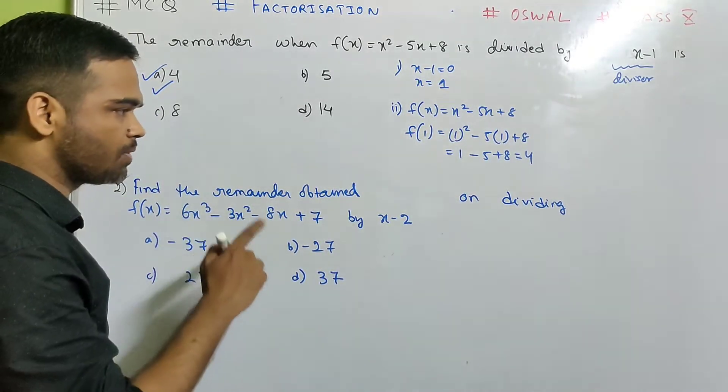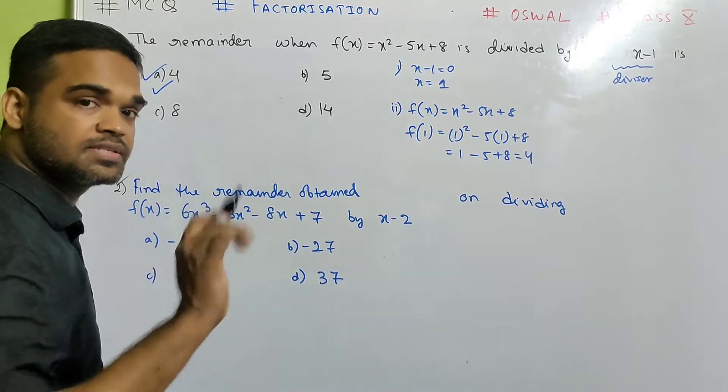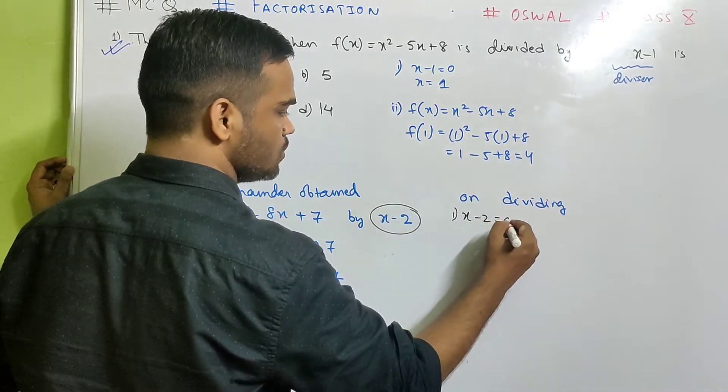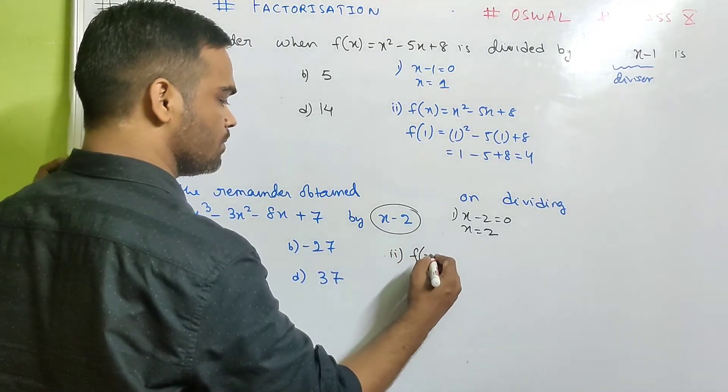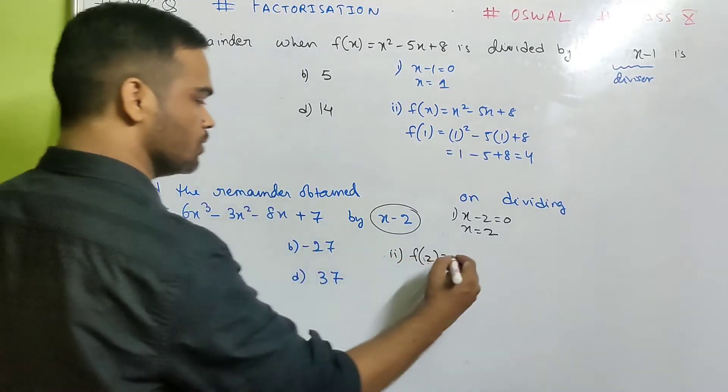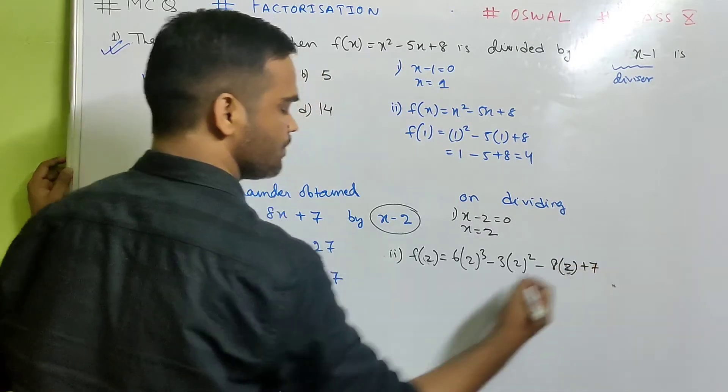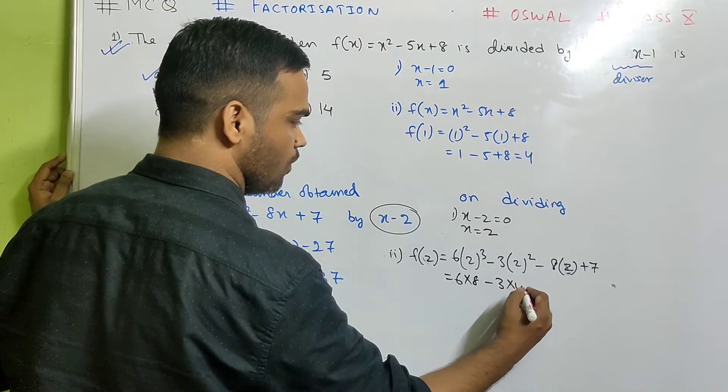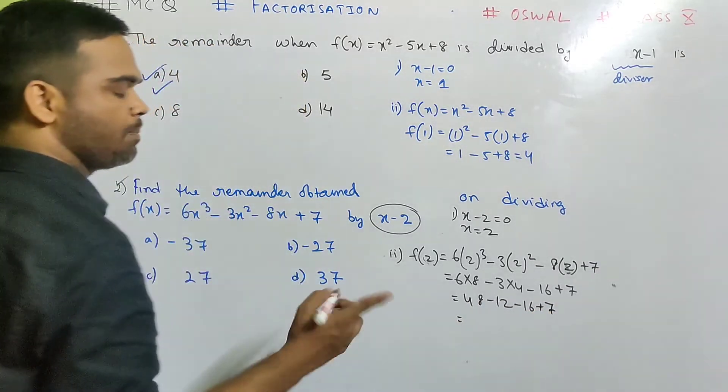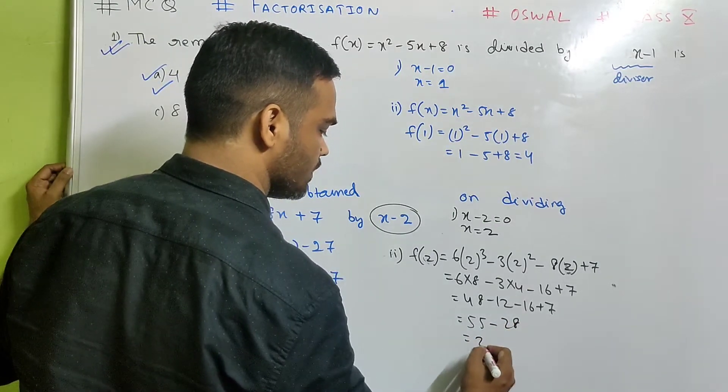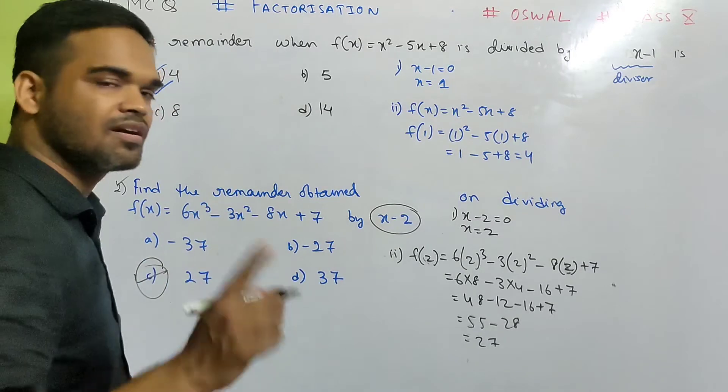Let us do the second one. Number 2. Find the remainder obtained on dividing f(x), 6x cube minus 3x square minus 8x plus 7 by x minus 2. The logic remains same. First step, you equate the divisor to 0, you get x as 2. Second step, you find f of 2. So f of 2 will be what? Instead of x, you substitute 2. So 6 into 2 cube minus 3 into 2 square minus 8 into 2 plus 7. So that's 6 into 8 minus 3 into 4 minus 16 plus 7. That's 48 minus 12 minus 16 plus 7. 48 plus 7 is 55 minus 28. That's 27, isn't it? So your option C is your correct option.